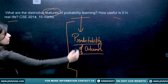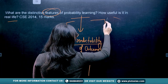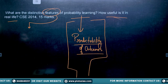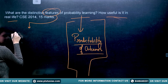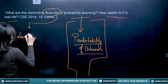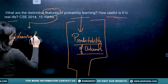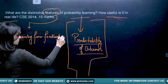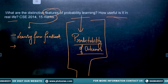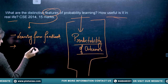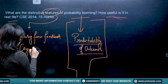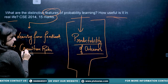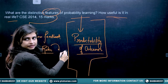First, talk about the features of probability learning, then discuss how useful it is in real life. The first distinctive feature is that it is learning from feedback. The second feature involves cognition rules — that means you try using your intelligence.